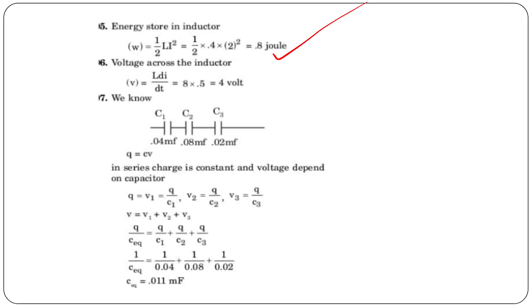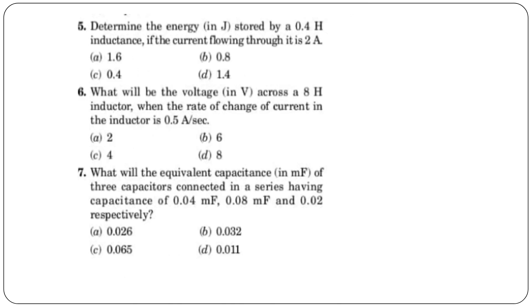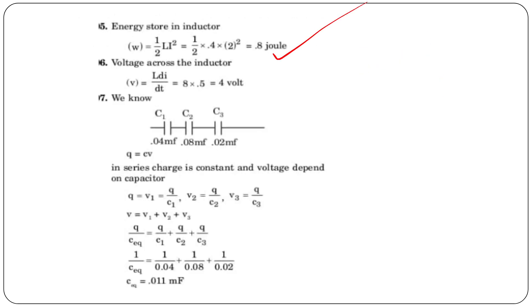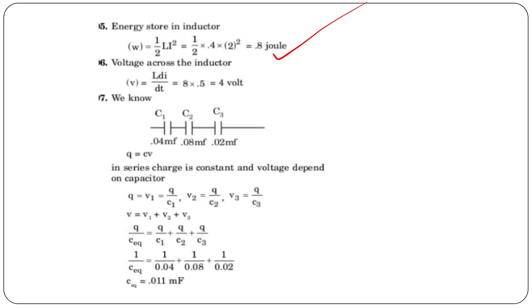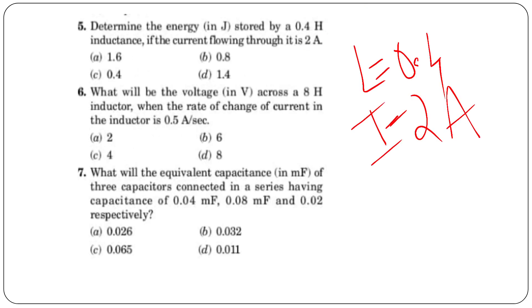We will use the energy equation: E = ½LI². In this question, L is 0.4 H and the current is 2 A. Substituting: E = ½ × 0.4 × 2² = 0.8 J.